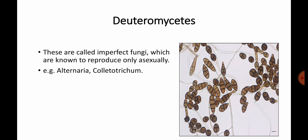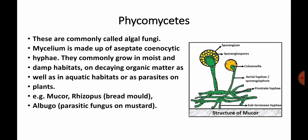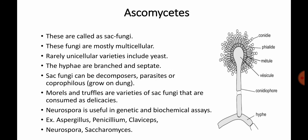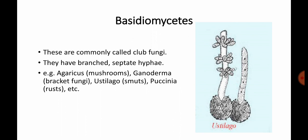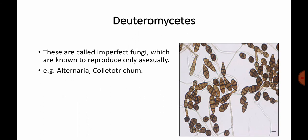Deuteromycetes are called imperfect fungi because they are known to reproduce only asexually. Examples include Alternaria and Colletotrichum. In Alternaria, septa are present so it has septate hyphae, but it is still classified as imperfect fungi. To summarize the four classes: Phycomycetes = algal fungi, Ascomycetes = sac fungi, Basidiomycetes = club fungi, Deuteromycetes = imperfect fungi.